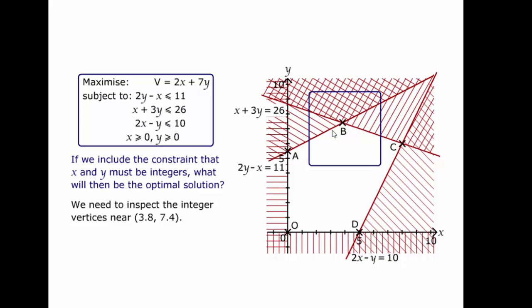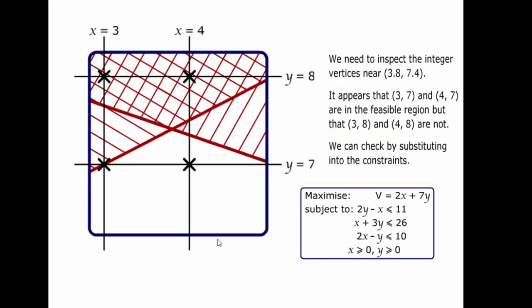One of the methods for doing this is to box the vertex in. Here's the vertex here. If we now look at all of the integer coordinates in the box that it lies in, we can then see if any of these provide us with a better solution.